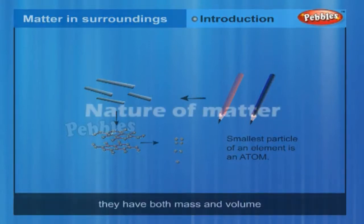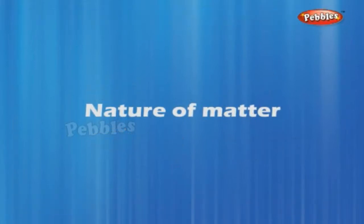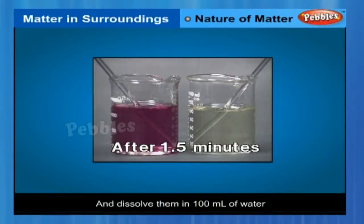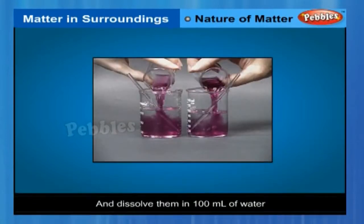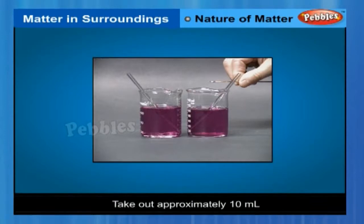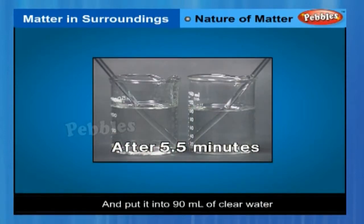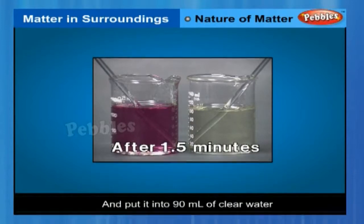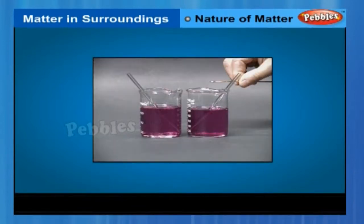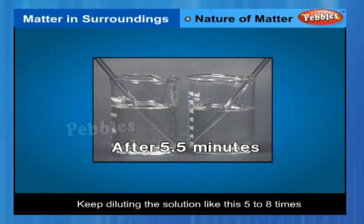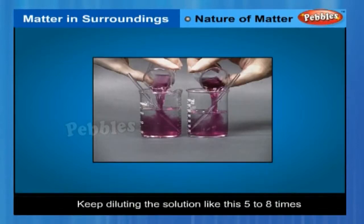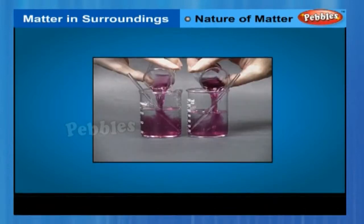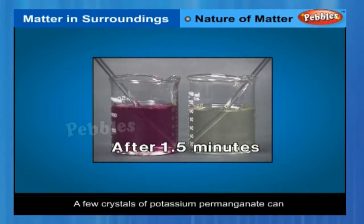Nature of matter. Take two or three crystals of potassium permanganate and dissolve them in 100 ml of water. Take out approximately 10 ml of this solution and put it into 90 ml of clear water. Take out 10 ml of this solution and put it into another 90 ml of clear water. Keep diluting the solution like this five to eight times. Is the water still colored?